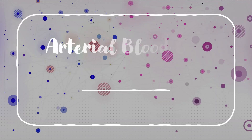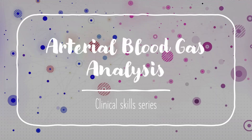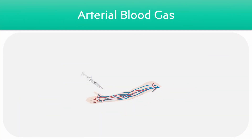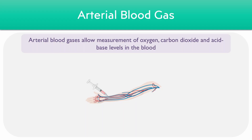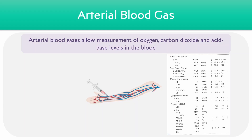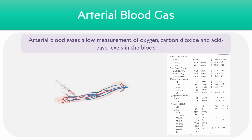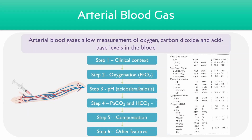Today we're going to be taking a look at arterial blood gas analysis, which is part of the clinical skills series. As a quick recap, an arterial blood gas involves taking a blood sample from one of the arteries in the body, usually the radial artery. When the sample is run, we get a good indication of the levels of oxygen, carbon dioxide, and acid-base levels in the blood. In this video, we're going to be going through a six-step approach to interpreting an ABG, which will hopefully help both for examinations and in clinical practice.